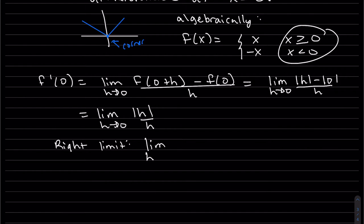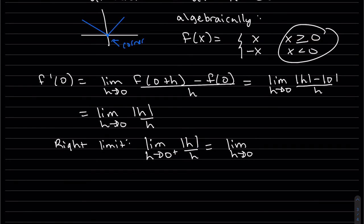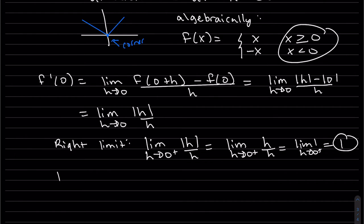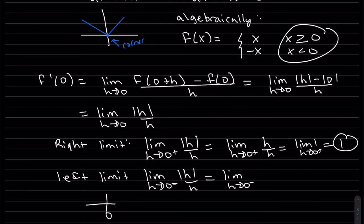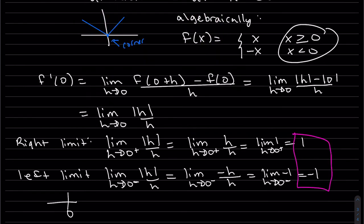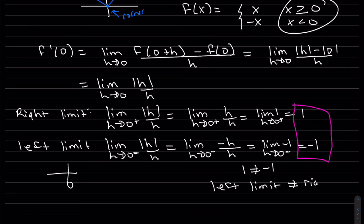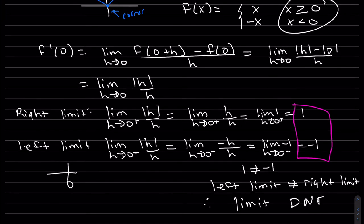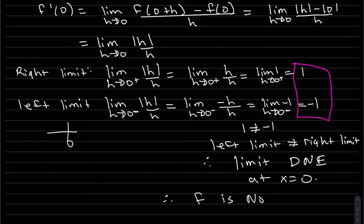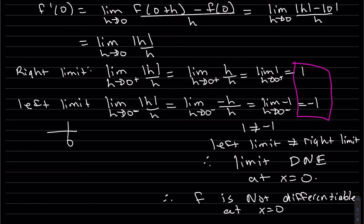The right-hand limit: to the right of zero h is positive, so |h| = h, and h/h = 1. The limit is 1. The left-hand limit: to the left of zero h is negative, so |h| = −h, giving −h/h = −1. The limit is −1. Since the left limit does not equal the right limit, the limit does not exist. Therefore, f is not differentiable at x = 0.